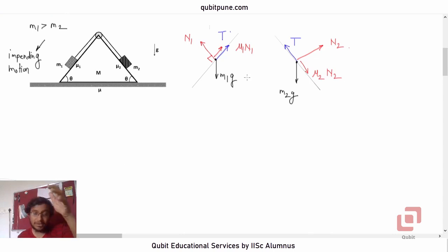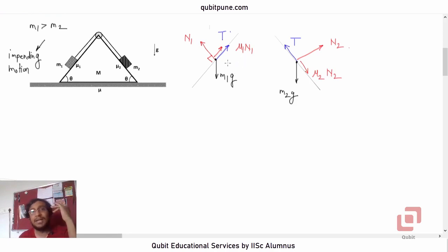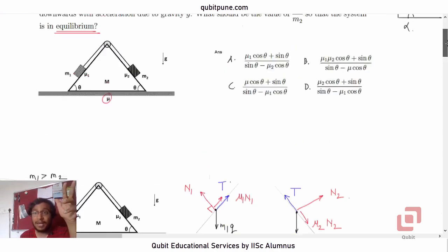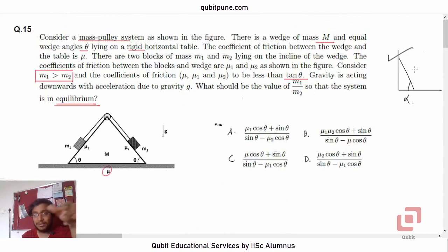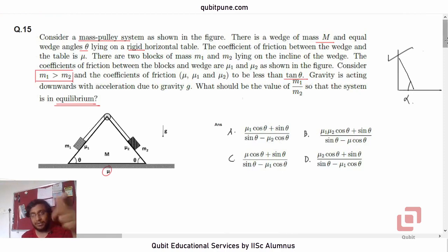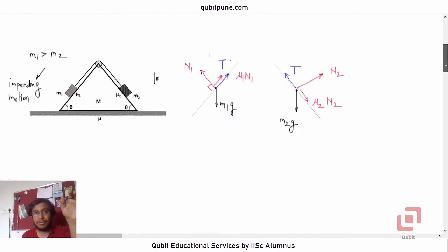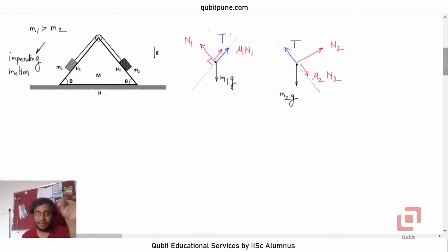The moment equation is not required here because the lines of action of all the forces pass through the same point. This is unlike the solid rod problem — the alpha calculation problem from the same paper — where we had to consider the moment equation as well. Here, no need.